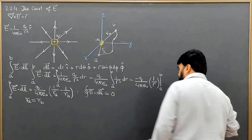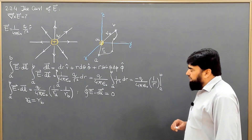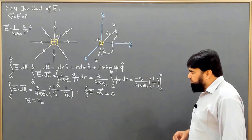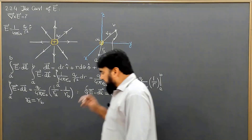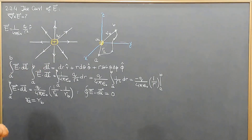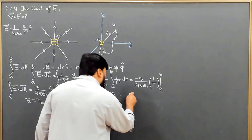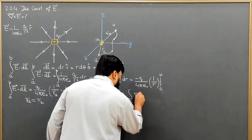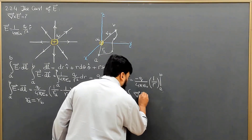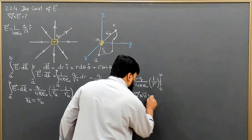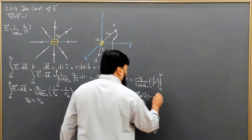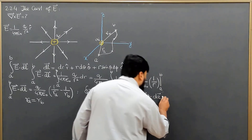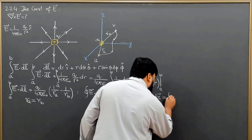The closed path integral equals zero. Now I will apply Stokes' theorem. As we know, Stokes' theorem says that if we take a surface integral and take the curl of any vector quantity dot dA — meaning the flux of the curl of that quantity — it is the same as taking a closed path integral of the quantity directly dotted with the length element.